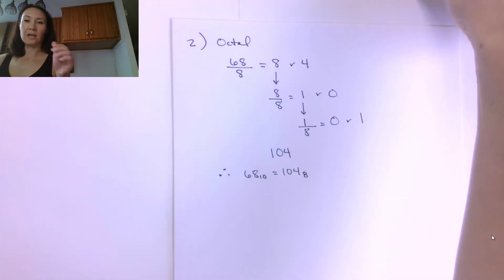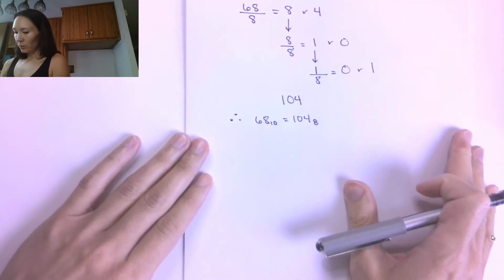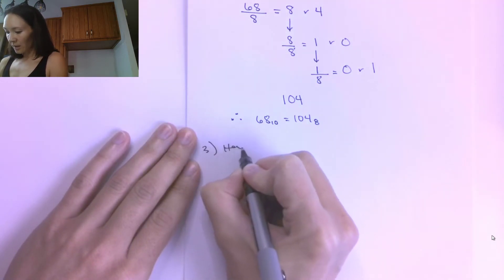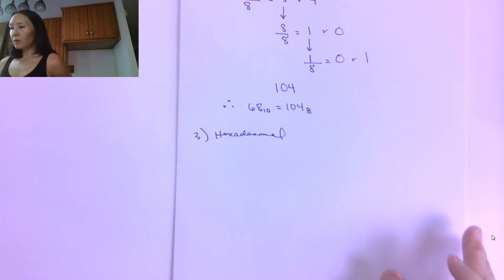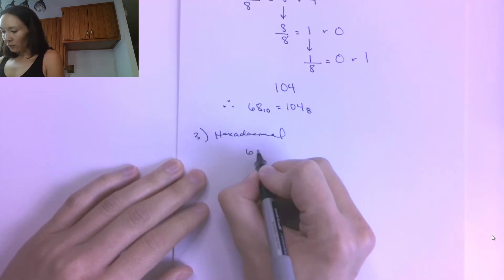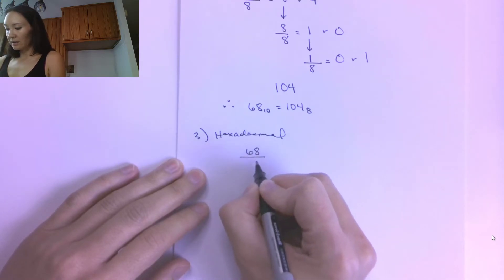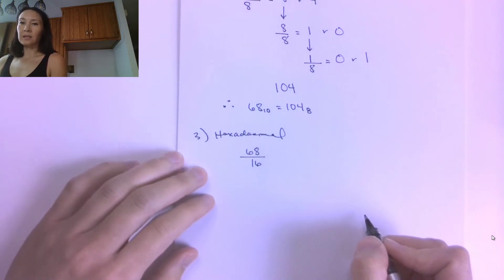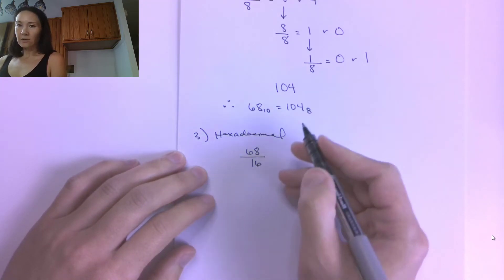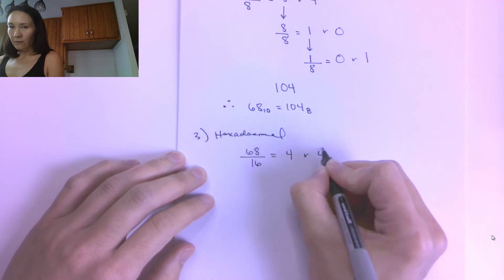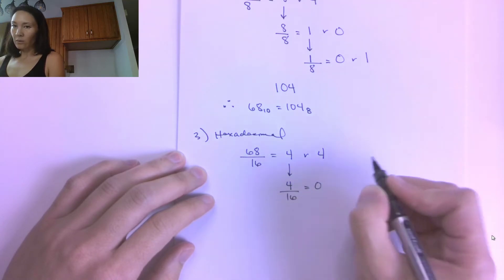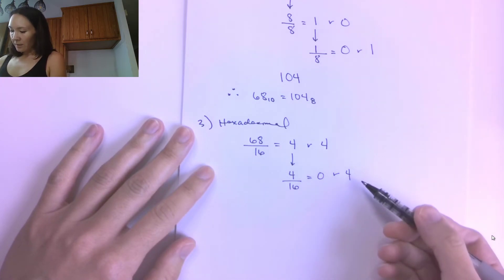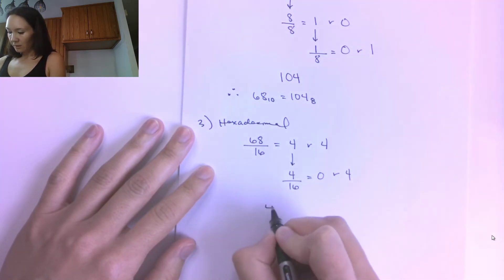The last conversion is hex. We want to convert this same number to hexadecimal. If we divide by 2 for binary and by 8 for octal, then to convert 68 to hexadecimal we divide by 16, because hex is a base 16 number system. So 68 divided by 16 gives 4 with a remainder of 4. Then 4 divided by 16 gives 0 with a remainder of 4. Collecting remainders from bottom to top gives us 44.